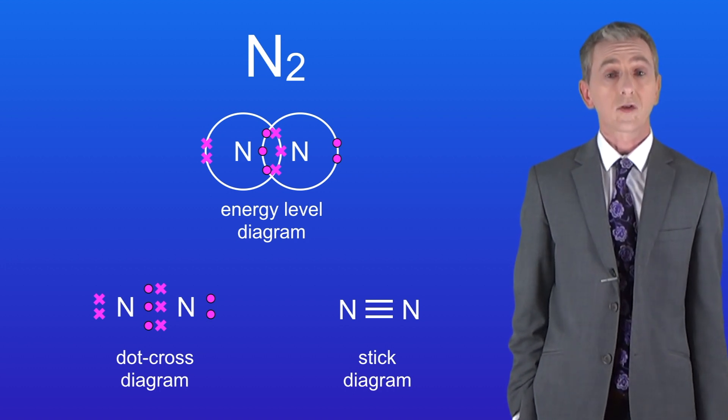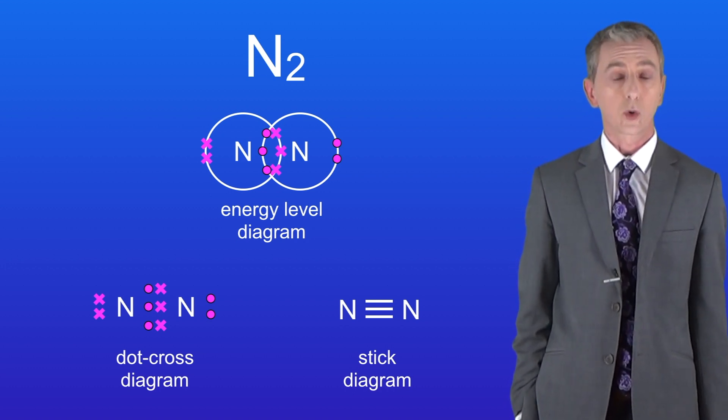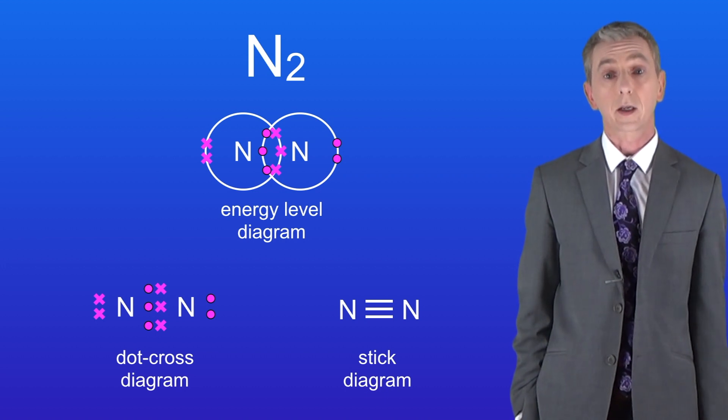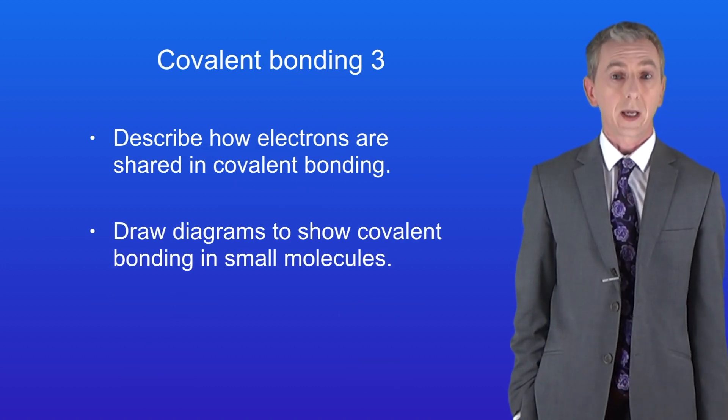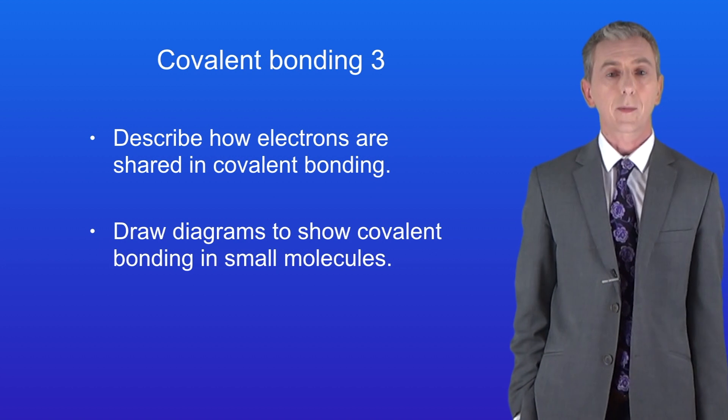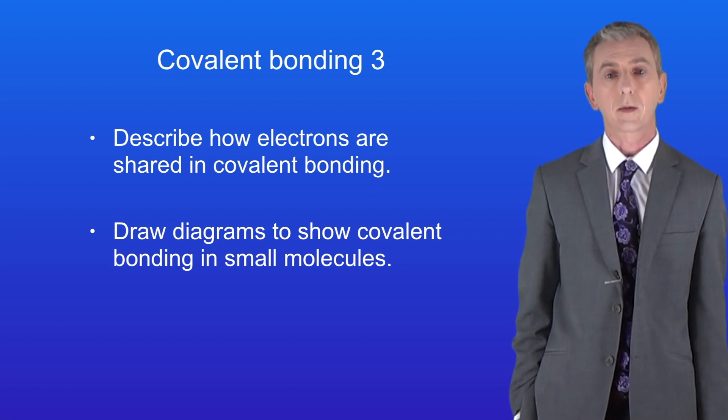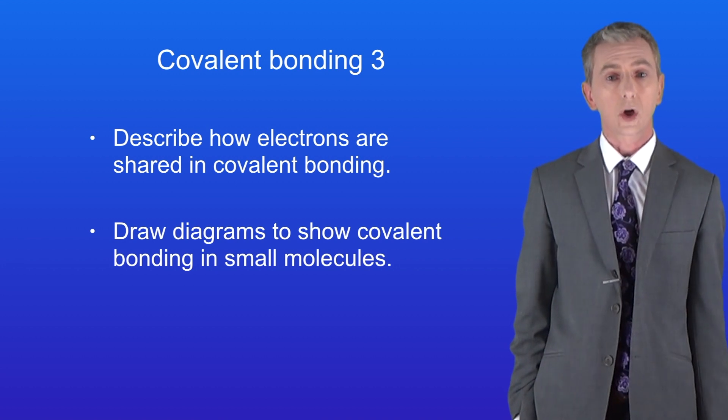You'll find plenty of questions on covalent bonding in my revision workbook which you can get by clicking on the link above. Okay so hopefully now you should be able to describe how electrons are shared in covalent bonding. You should then be able to draw dot and cross diagrams to show covalent bonding.